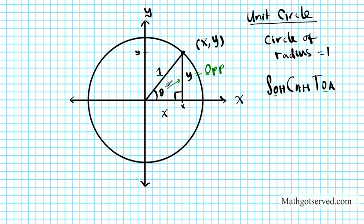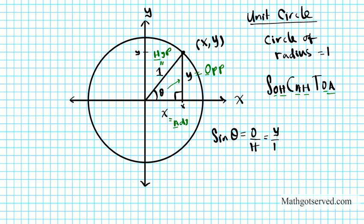The side opposite the 90-degree angle is the longest side, the hypotenuse — that's the H. The third side is the adjacent — that's the A. So we are now ready to create our unit circle ratios. Starting with sine: sine theta from SOH is opposite over hypotenuse. The opposite is y and the hypotenuse is 1, so y over 1 equals y. That gives us the first unit circle ratio: sine theta equals y.